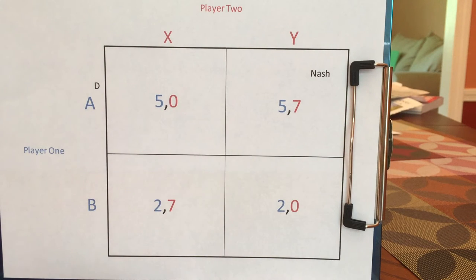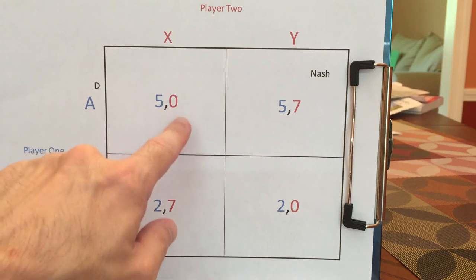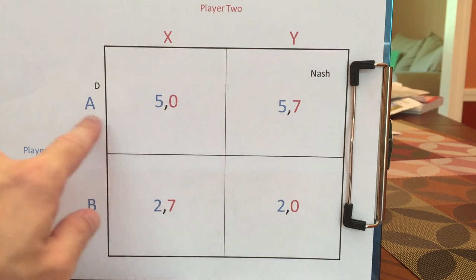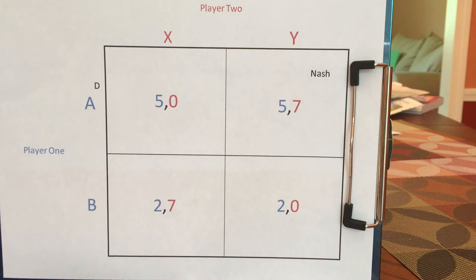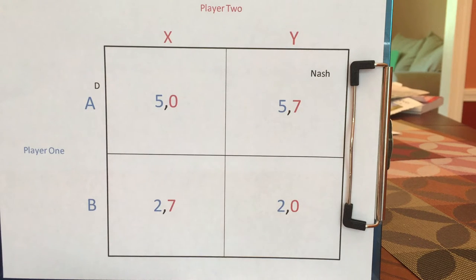Had I known player one would pick A, I would not have gone with X. So I regret my choice given what player one did. So again, it's only a Nash Equilibrium if no one regrets how they moved given what the other person does.